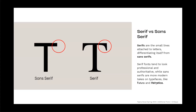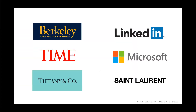Serif versus sans serif: serifs are the small lines attached to letters, differentiating them from sans serif. Serif fonts tend to look more professional and authoritative, while sans serif fonts are more modern, like Futura and Helvetica. Brands like Berkeley, Tiffany & Co., and Vogue use serif fonts, giving an old-time, trustworthy, established feel. More modern companies like LinkedIn, Microsoft, and Saint Laurent use sans serif, bringing a different personality to the table.